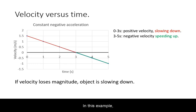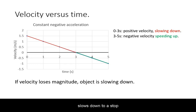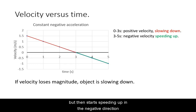In this example, the object starts with a positive velocity of 1.5 meters per second, slows down to a stop by 3 seconds, but then starts speeding up in the negative direction afterwards.